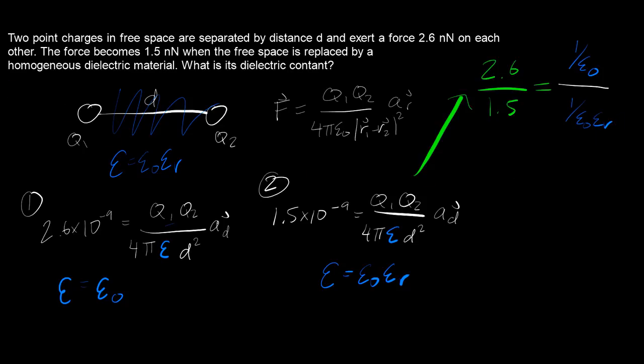And when you clean that up a bit, you're going to get 2.6 over 1.5 is equal to just epsilon naught times epsilon r over epsilon naught. And then these two will very neatly cancel and then you'll have your answer for epsilon r, just like that.